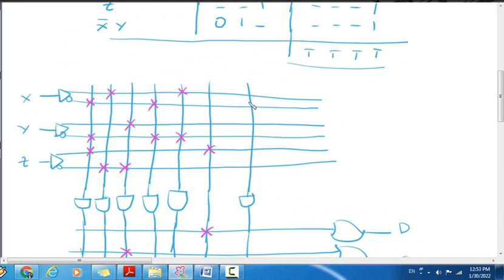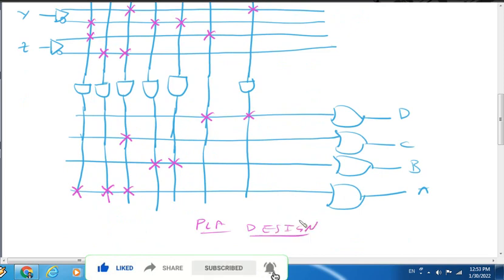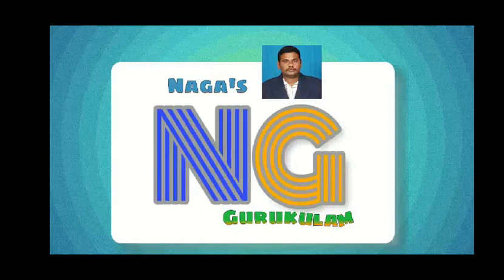Finally, we connect X bar Y for 0, 1, dash to the output functions ABCD. Thank you, thanks for watching this video. Please subscribe to Nagas Gurkulam. Thank you.